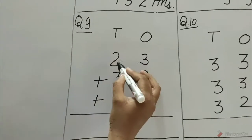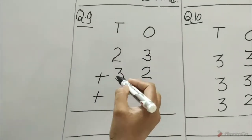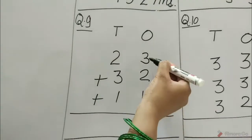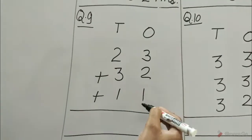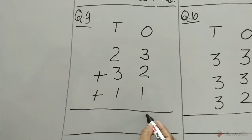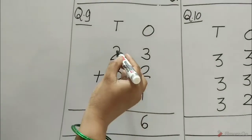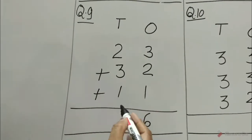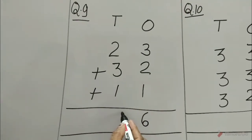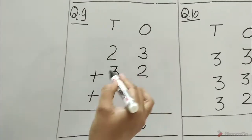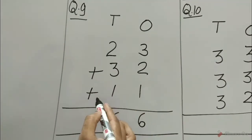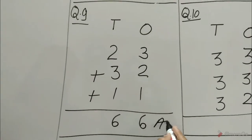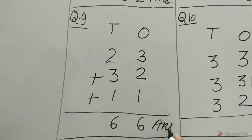Question number 9: 23 plus 32 plus 11. Ones: 3 plus 2 is 5, 5 plus 1 is 6. Tens: 2 plus 3 is 5, 5 plus 1 is 6. 23 plus 32 plus 11 is equal to 66.